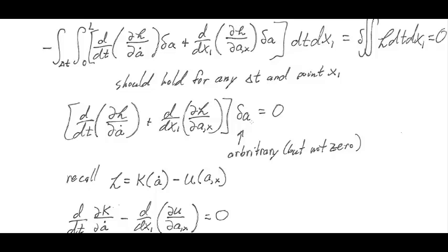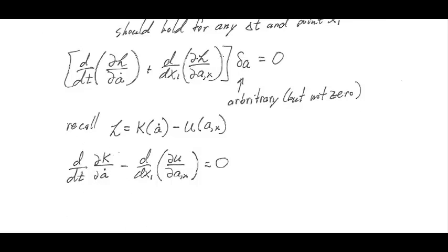So we just divide this out, and we say that for any non-zero delta variation in A, this has to be zero to be zero, right?